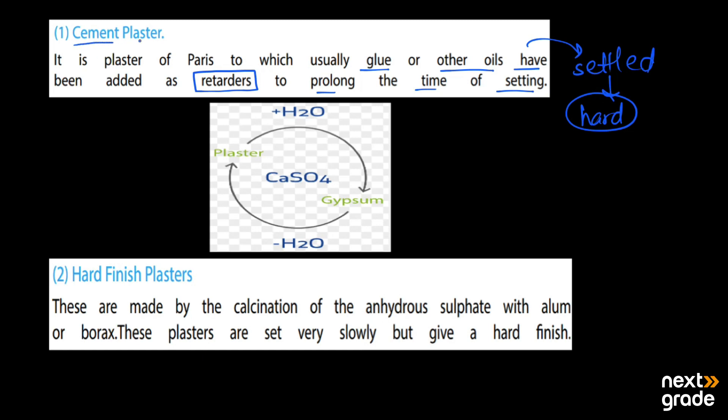In this way it starts to settle down and changes into hard material after some time. Cement plasters are also used for making houses. When we have calcium sulfate and we add water, it changes into gypsum, but when we remove that water it changes into Plaster of Paris. So this process is a circular process.